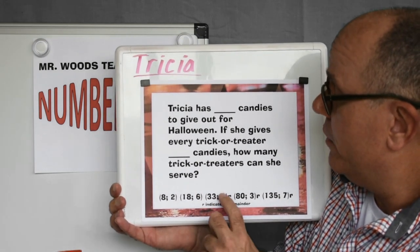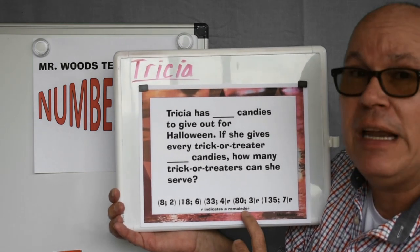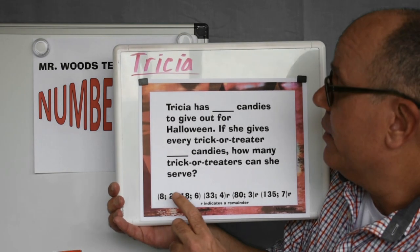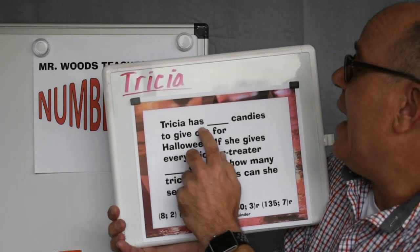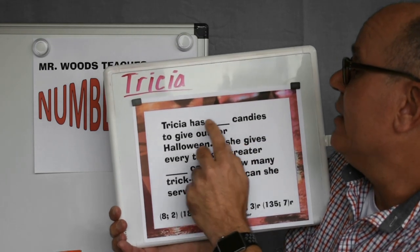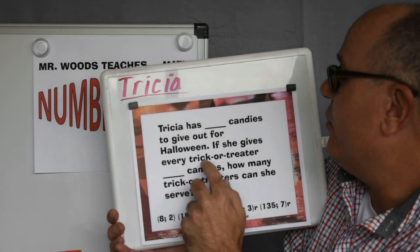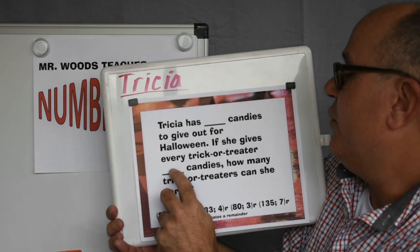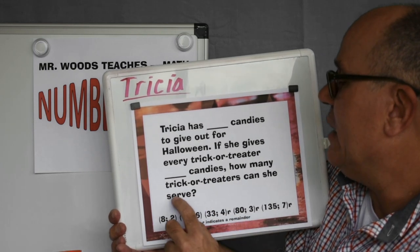Just a note, some of them have an R after them, and that indicates a remainder. So I'm going to use the first number pair here. Tricia has eight candies to give out for Halloween. If she gives every trick-or-treater two candies, how many trick-or-treaters can she serve?